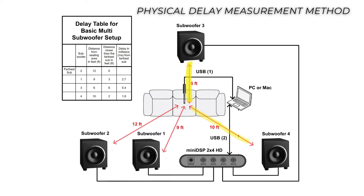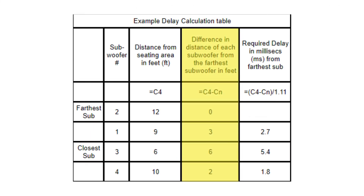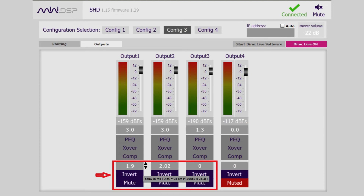First, measure the distance from the subwoofers to the central listening area. Next, calculate the difference in distance of each subwoofer from the farthest subwoofer in feet. Then, find the delay in milliseconds by dividing the distance in feet by 1.11. Finally, enter the resulting value in the delay section for each respective channel, where one millisecond is equal to approximately one foot. After you've measured all the delays and are confident you have valid numbers, enter the correcting delays in the plug-in output section, then verify that you have minimized the delays by making the same measurements again.